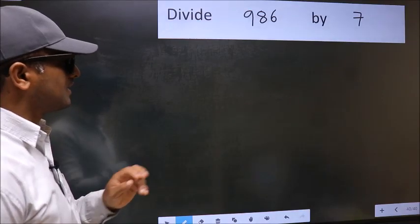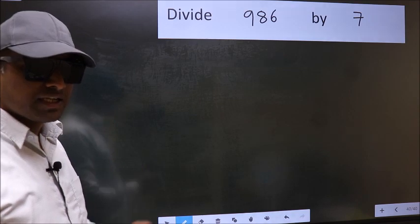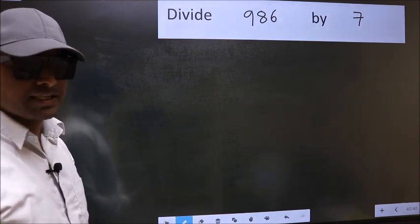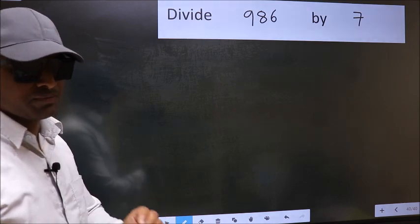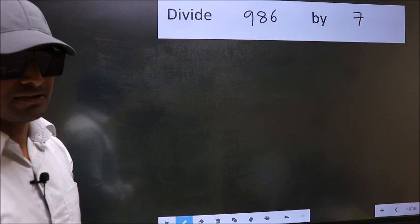Divide 986 by 7. While doing this division, many do this mistake. What is the mistake that they do? I will let you know. But before that, we should frame it in this way.